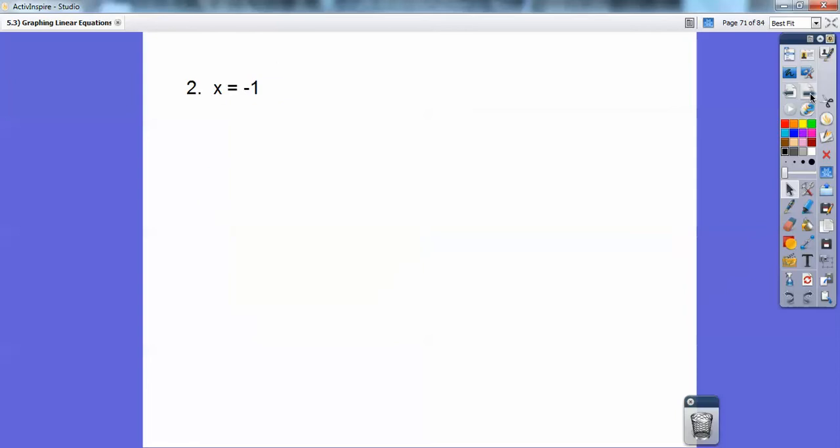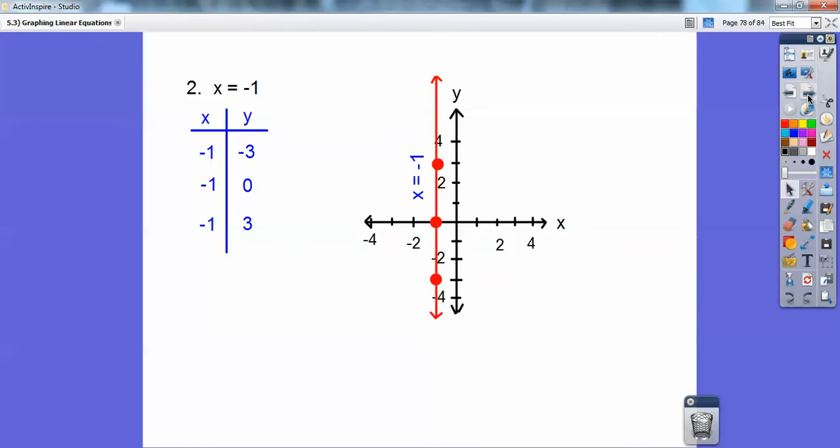Let's try x = -1. Here we're going to find it doesn't matter what y is. x is always going to be -1, no matter what. So this says go to the left 1, down 3. So when I graph those, to the left 1, down 3. To the left 1, up 0. That's that one. And then to the left 1, up 3. So when it's x equals a number, it gives you a vertical line.